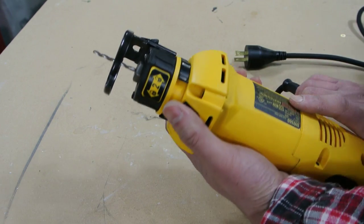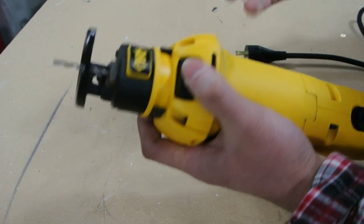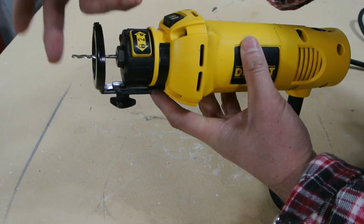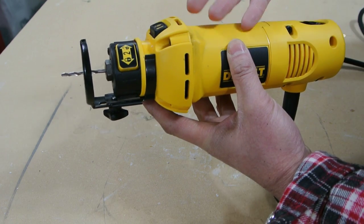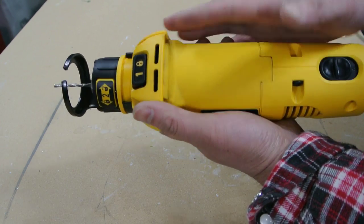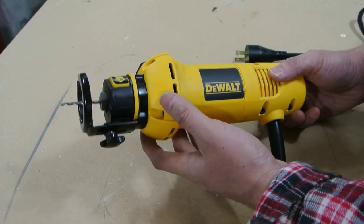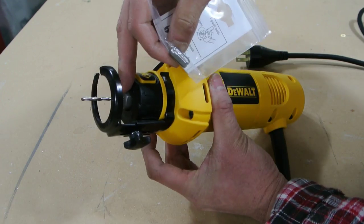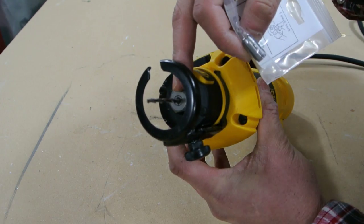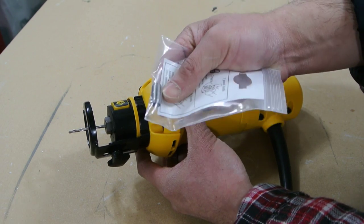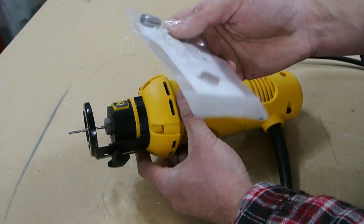When I purchased it, it came with one bit, a drywall or multi-purpose bit, the tool itself, and it came with an extra collet here. Right now it's one-eighth, their standard size bit, but this will allow it to go up to a quarter inch as well, so standard size collets which is nice.